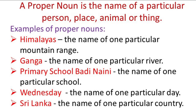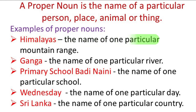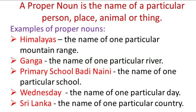Let us look at some more examples of proper nouns. Please repeat after me. Himalayas — the name of one particular mountain range. Ganga — the name of one particular river. Primary School Badi Nani — the name of one particular school.